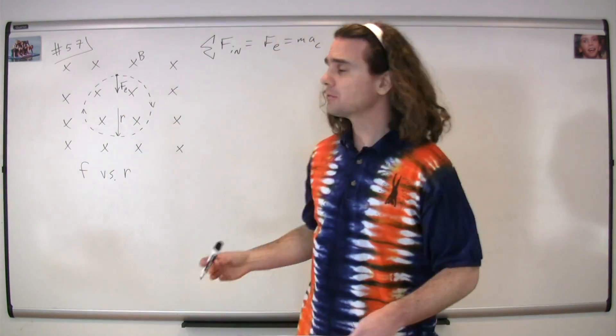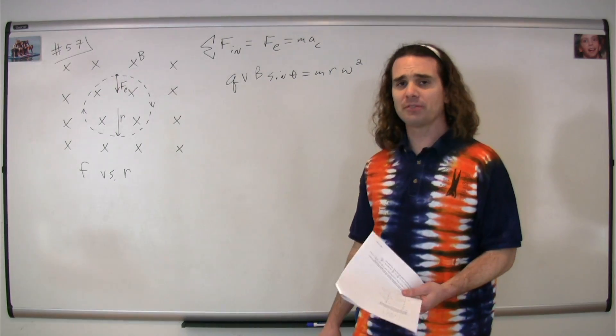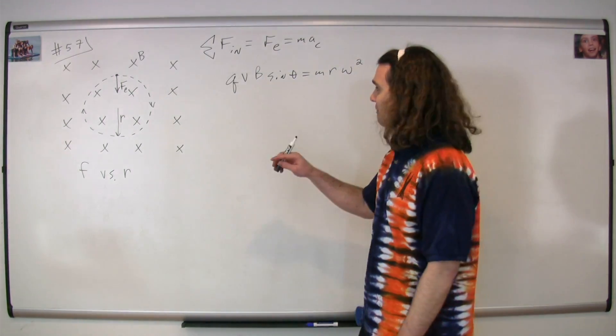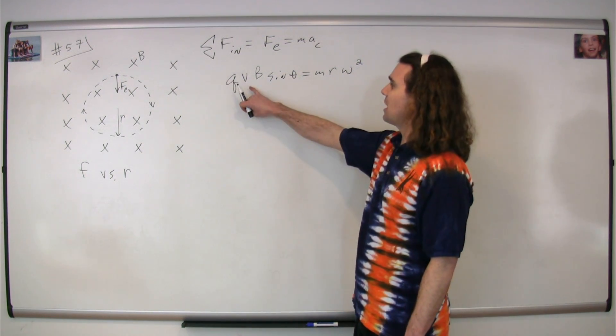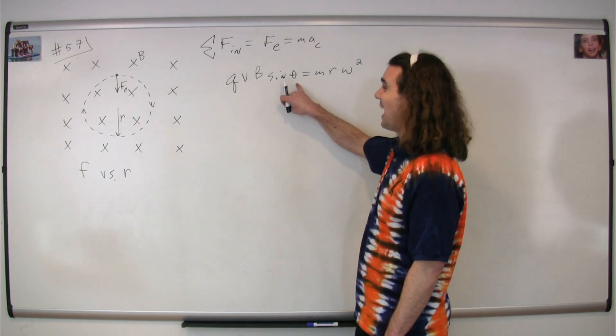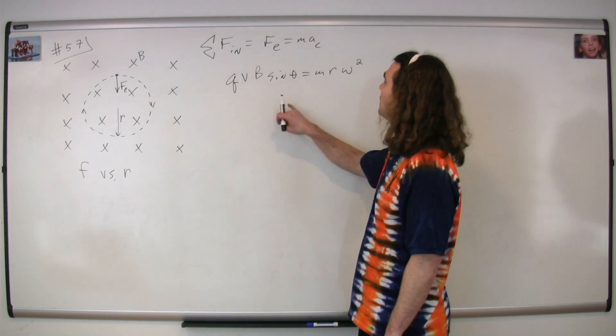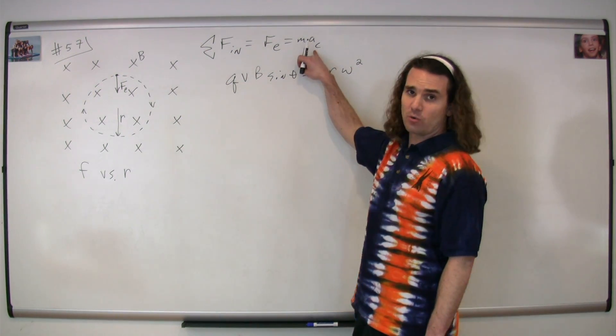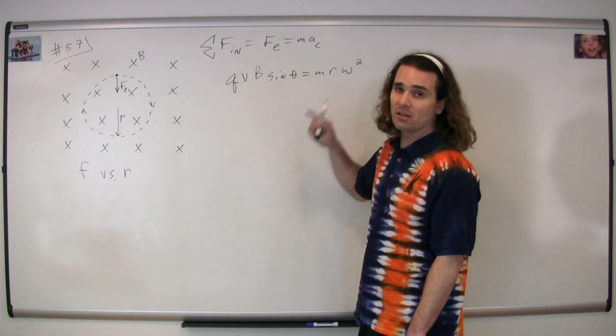Now we substitute in equations. The equation for the magnetic force on a moving charge in a magnetic field is the charge times the velocity times the magnetic field times the sine of the angle between the velocity and the magnetic field. The equation for centripetal acceleration we're going to use this time is the radius times the angular velocity squared.